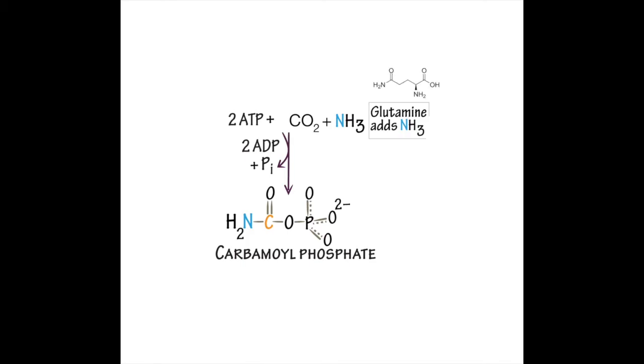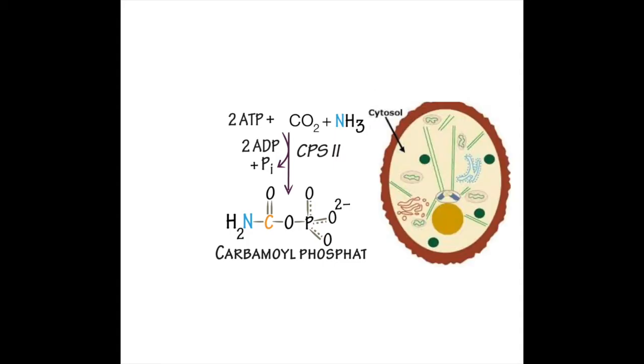In this process, glutamine is converted into glutamate, where it loses an amine. This reaction is catalyzed by carbamoyl phosphate synthetase 2, or CPS2 for short, which takes place in the cytosol.